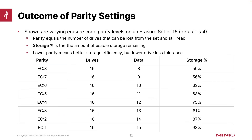Here are some example outcomes of different parity settings, working with a total of 16 drives. Lower parity gives better storage efficiency but lower drive loss tolerance, since parity equals the number of drives that can be lost from the set. With 16 drives, the default of 4 parity gives 12 data blocks and 4 parity blocks — you can lose 4 drives and still maintain 75% of your storage for data. You'll get the same output if you run these numbers through the online calculator.